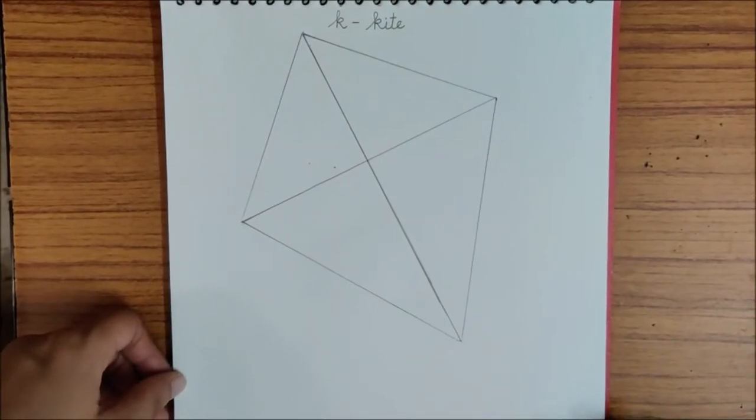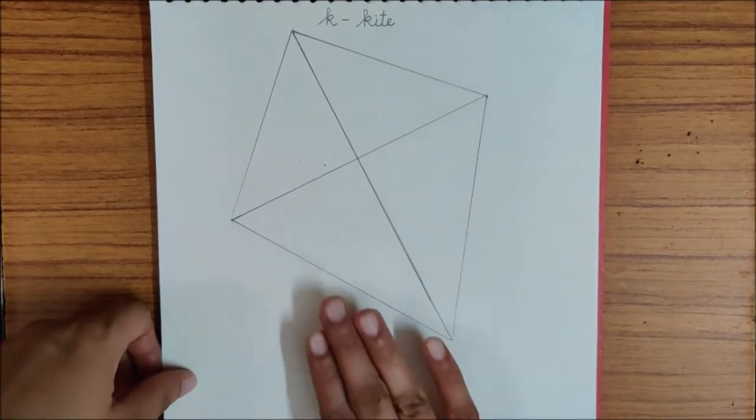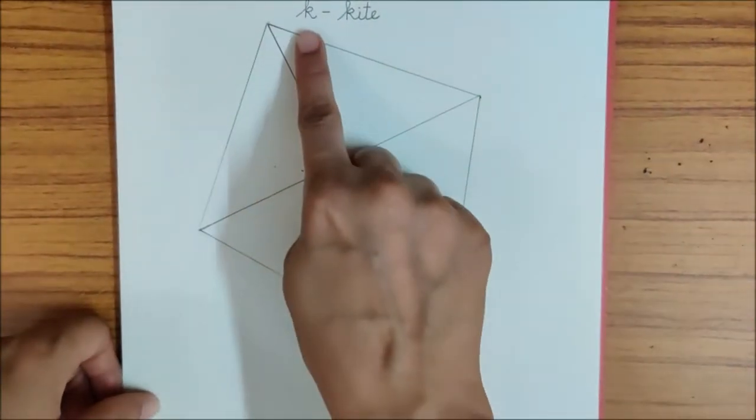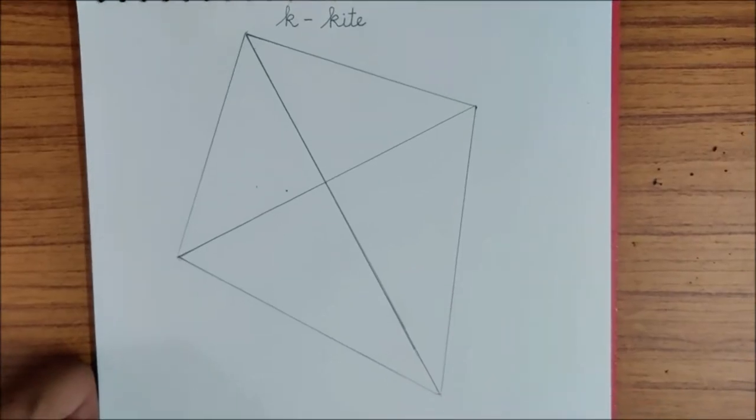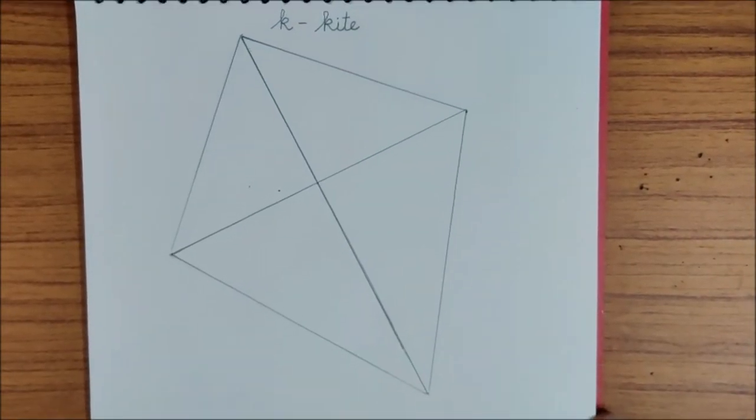Hello children, you remember we have done a new letter, letter K and what is this children? Yes, it is a kite. K ka kite. I have drawn this kite in my drawing file.